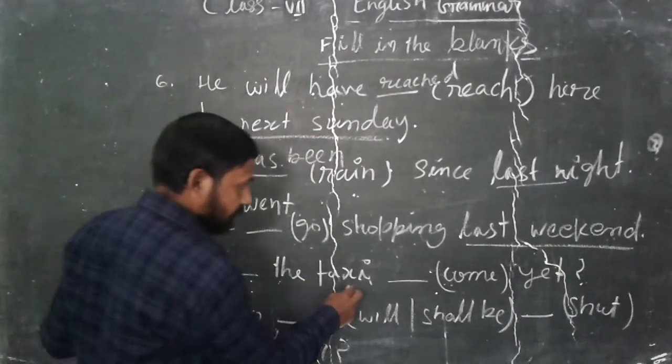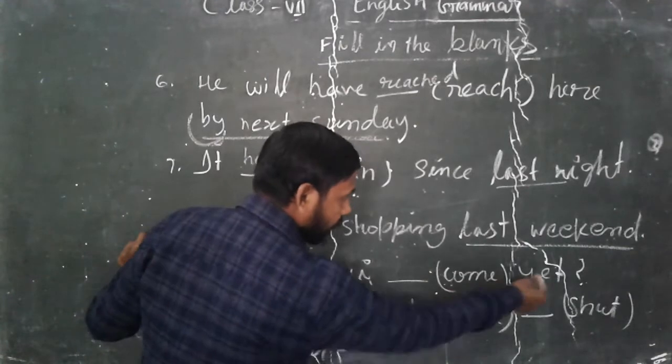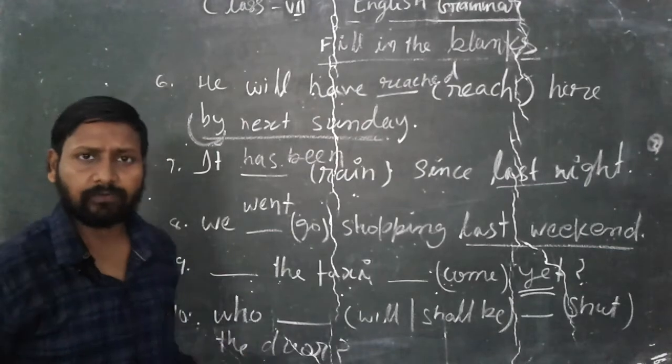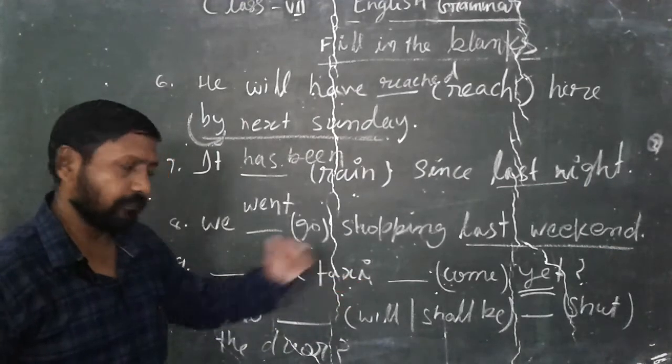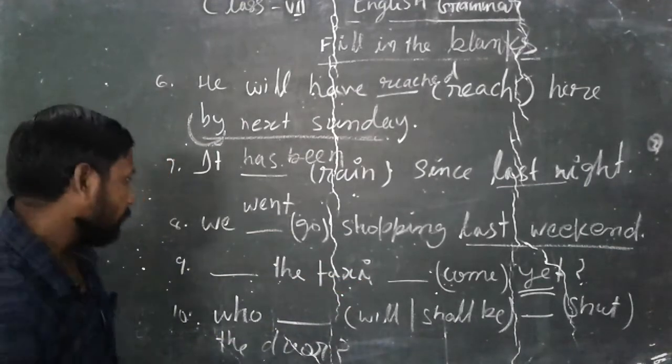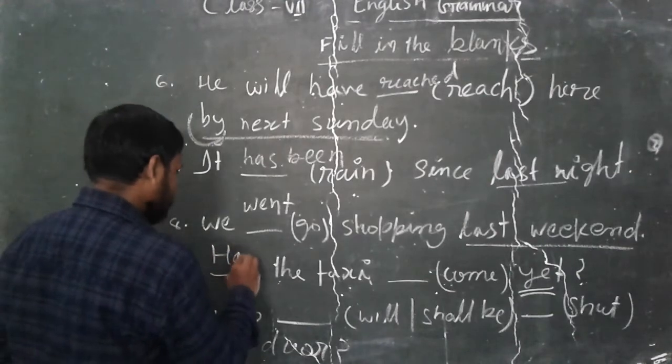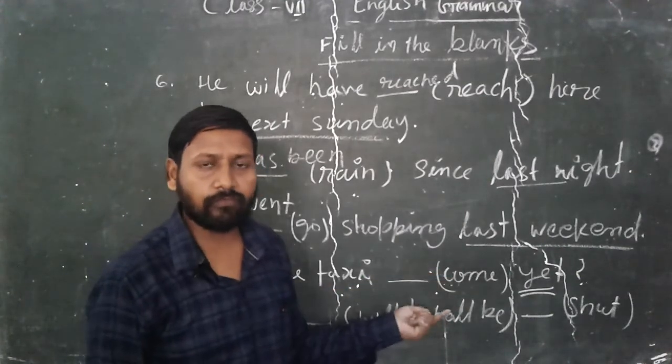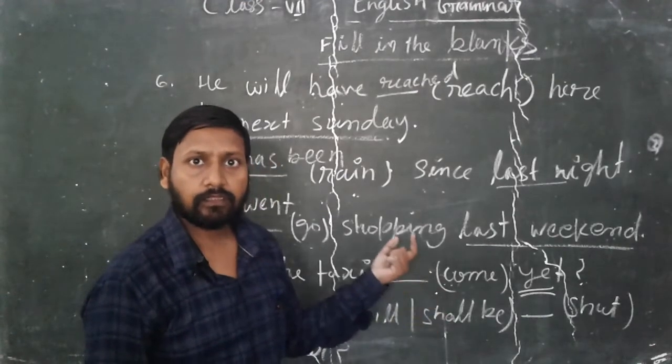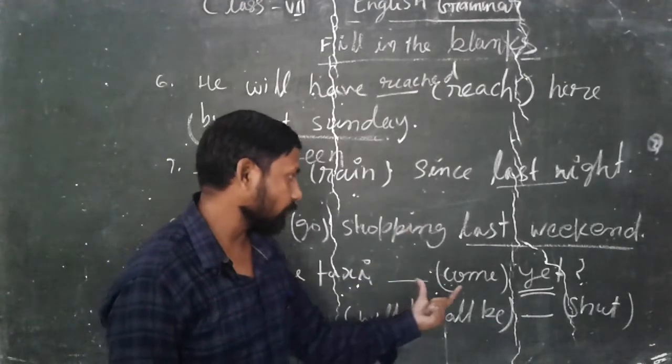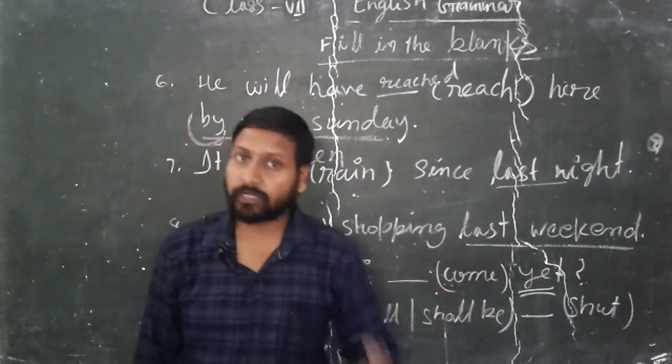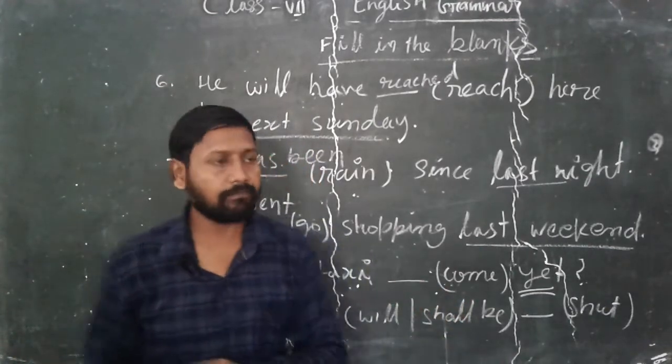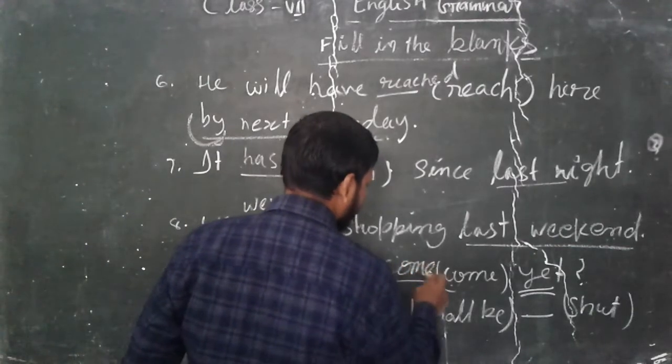The taxi come yet. Yet means till now. That is a present perfect tense. When it says has the taxi come, which form will be used? We will use here third form of the verb. So according to come, what will be the third form of come? Come, came, come. So come will be here.